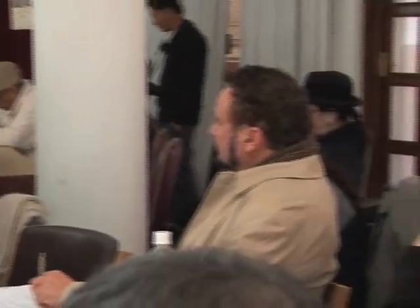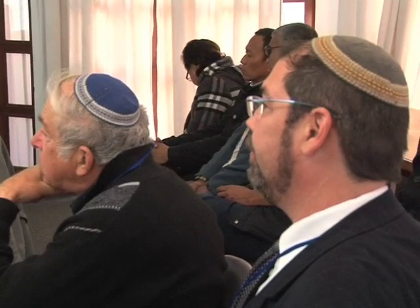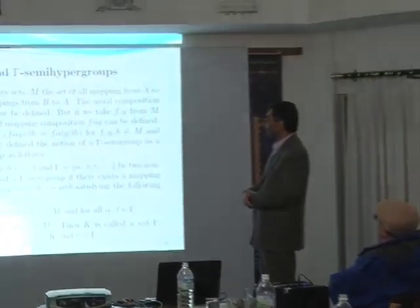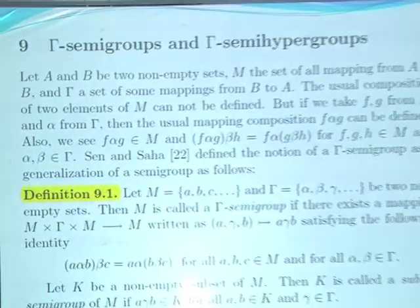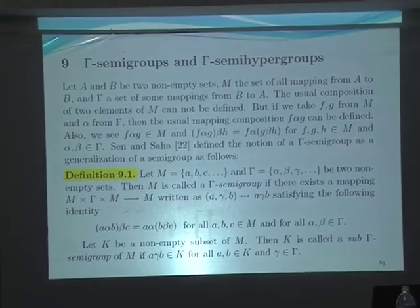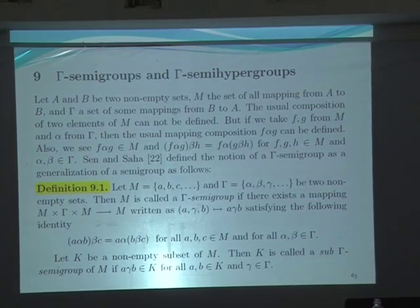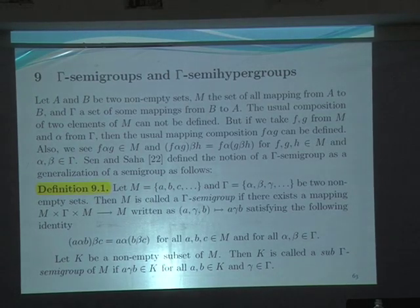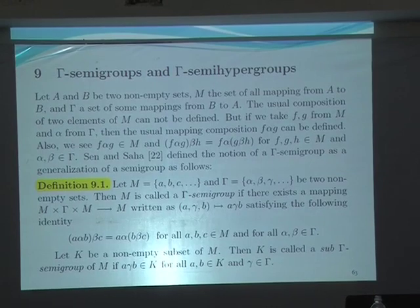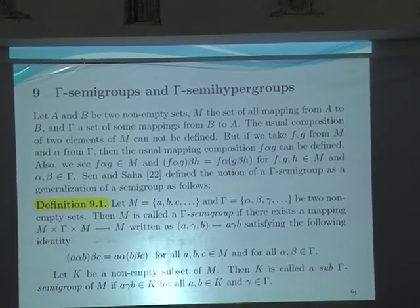With this definition, you can also multiply matrices that are not square. Let M be a set and gamma also a set. Then M is called a gamma semigroup if there exists a mapping from M × Γ × M to M. With this notation, we can consider an associative law. Note that gamma can change every time — when gamma changes, it is the same as changing the operation.